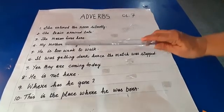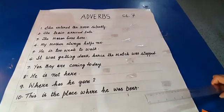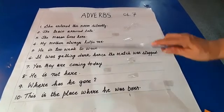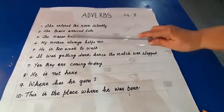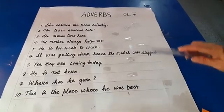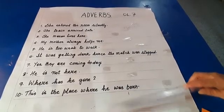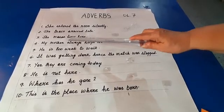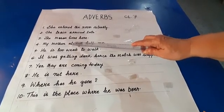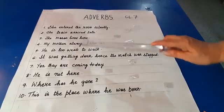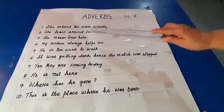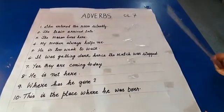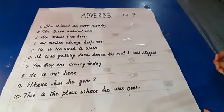Sentence number three: the mason lives here. 'Lives' is your verb. I ask the question 'where does the mason live?' and you will tell me 'here.' Therefore, 'here' is the adverb.